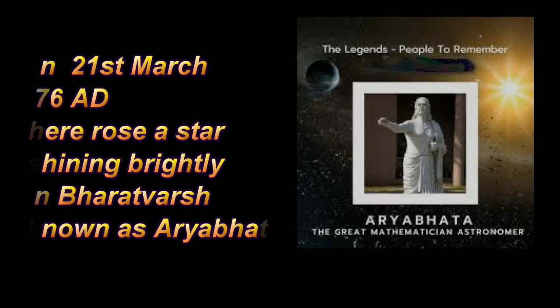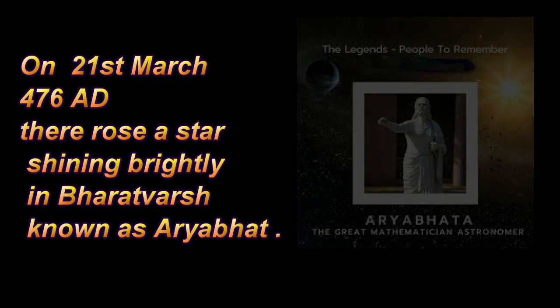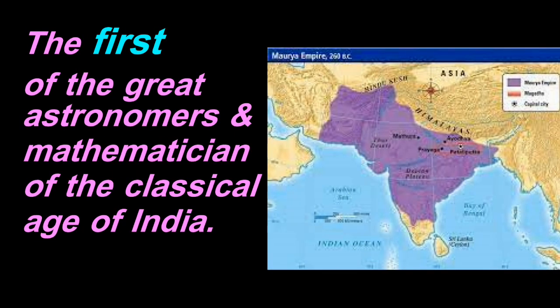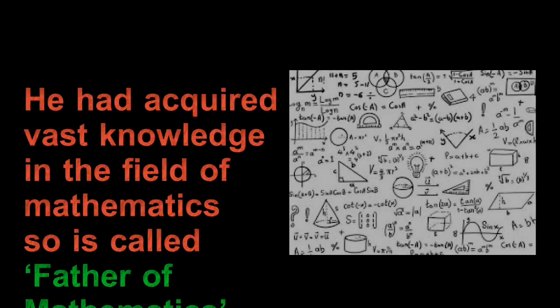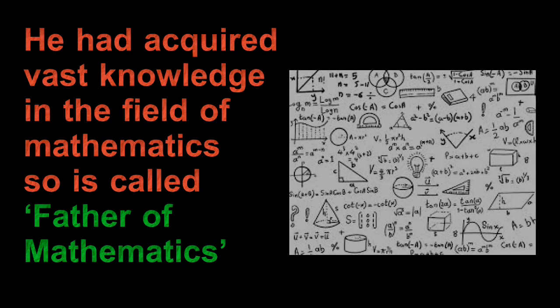In 21st March, 476 A.D., there was a star shining brightly in Bharat was known as Aryabhata, the first of the great astronomers and mathematicians of the classical age of India. He had acquired vast knowledge in the field of mathematics, so he is called father of mathematics.